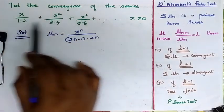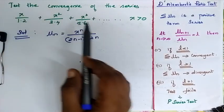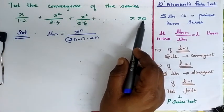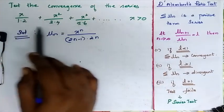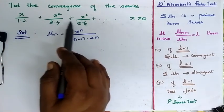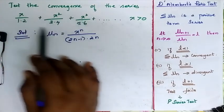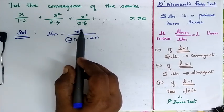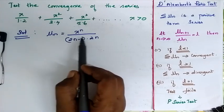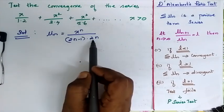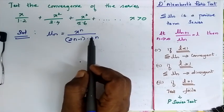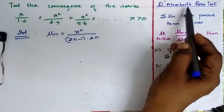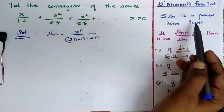Test the convergence of the given series where x is greater than 0. I can generalize this series as un = x^n / (2n-1)(2n). I am going to prove this convergence by D'Alembert's ratio test.